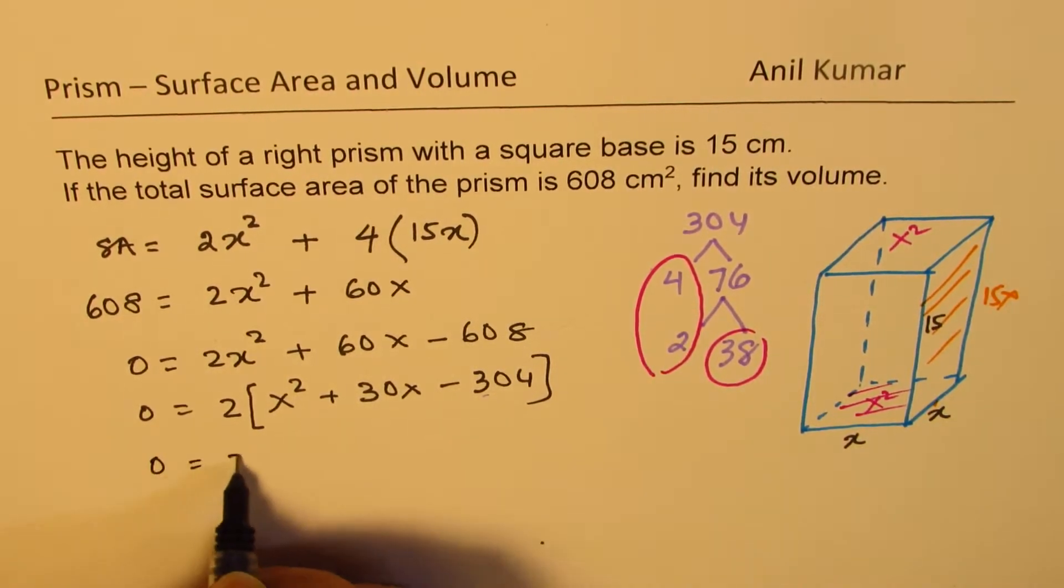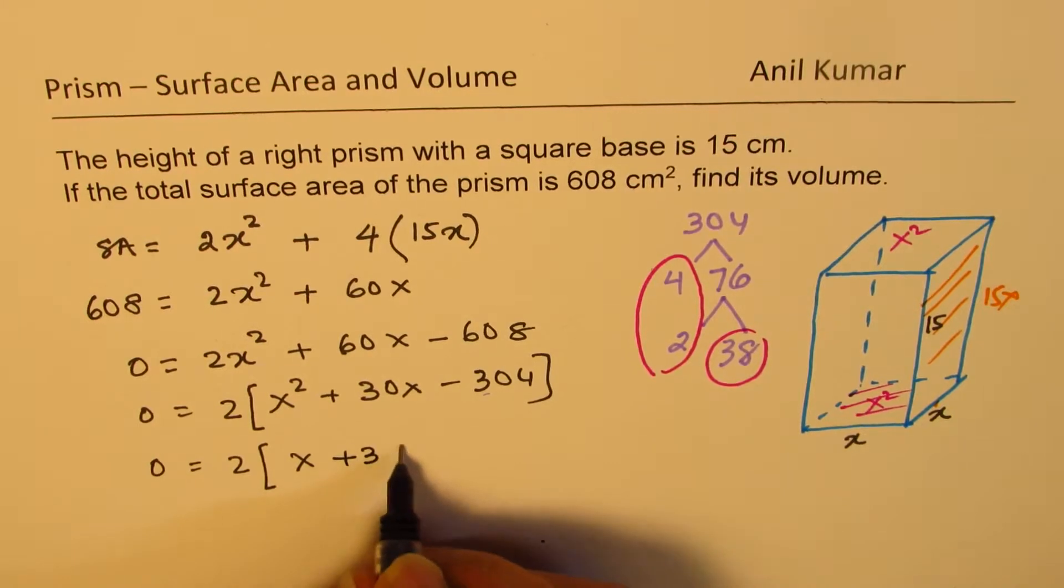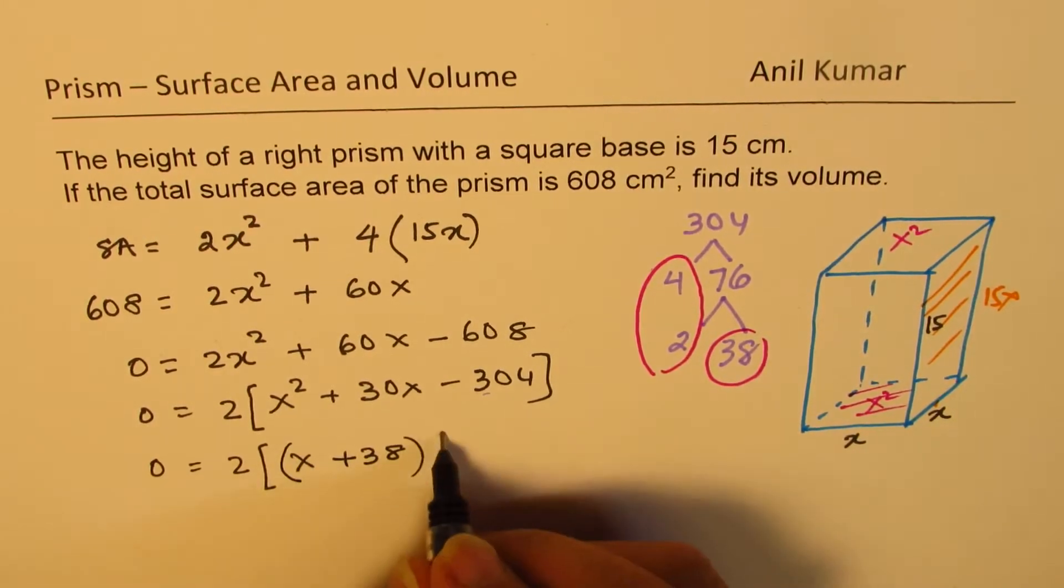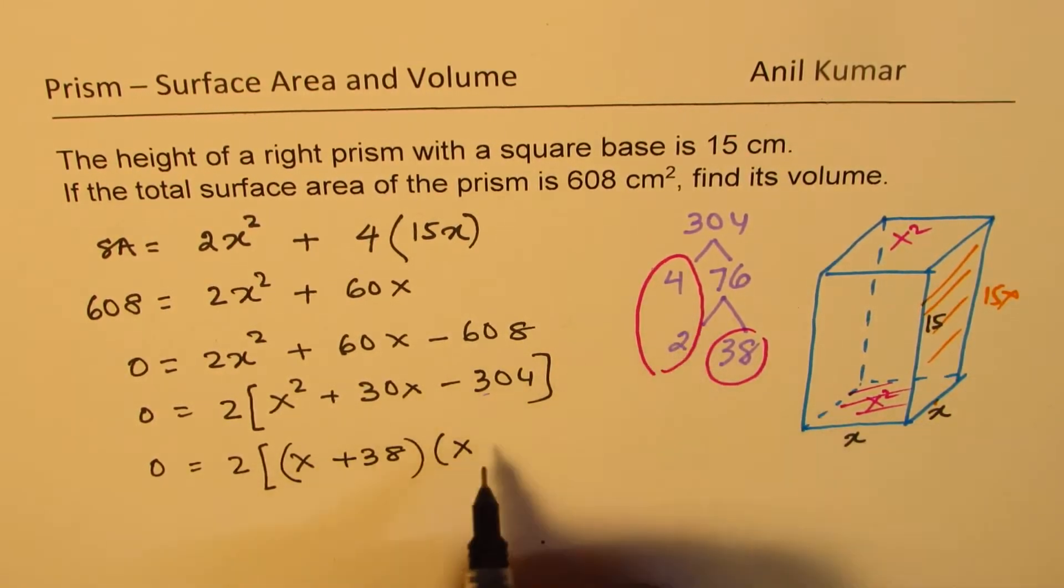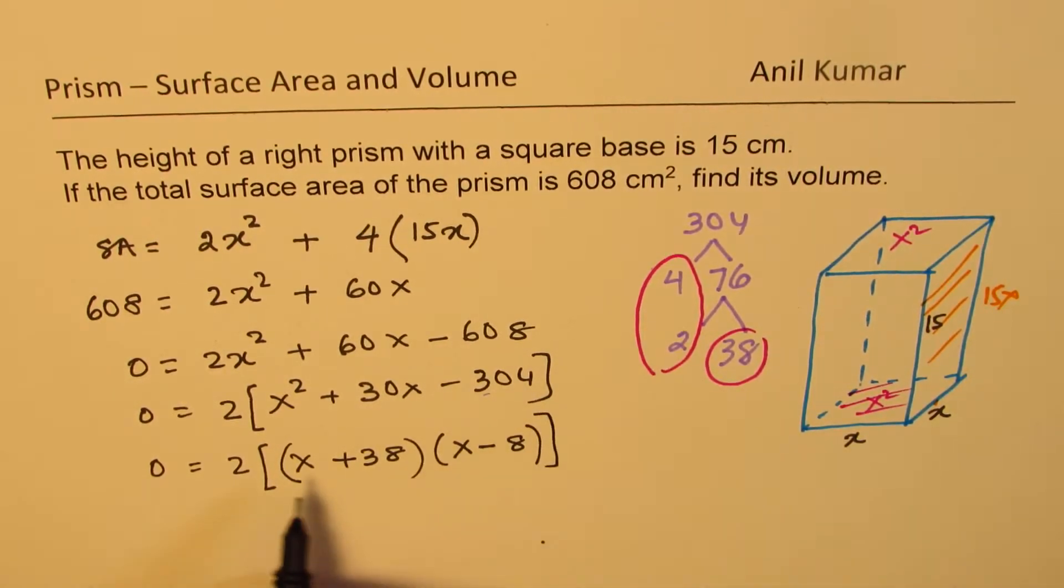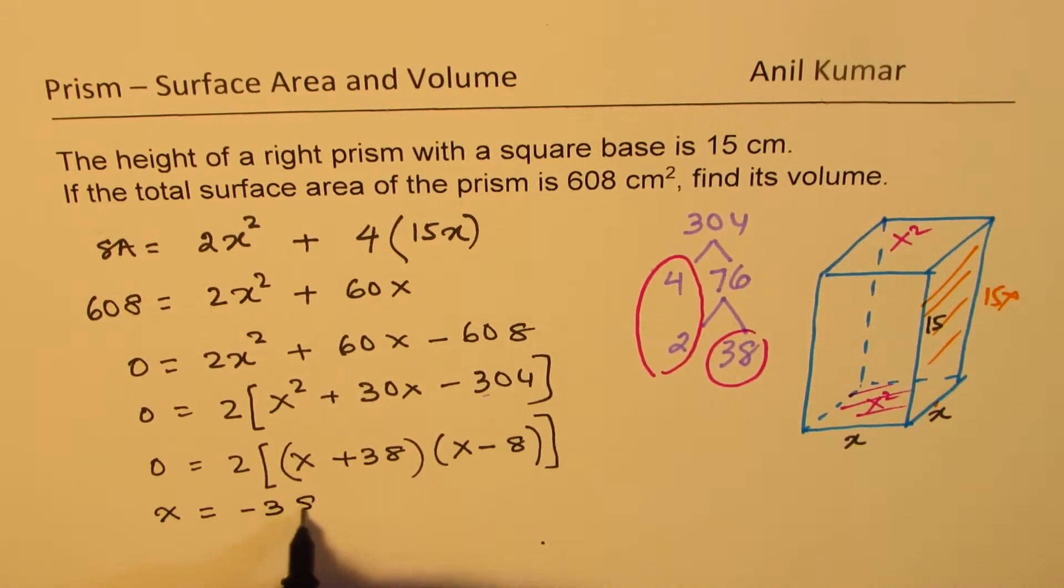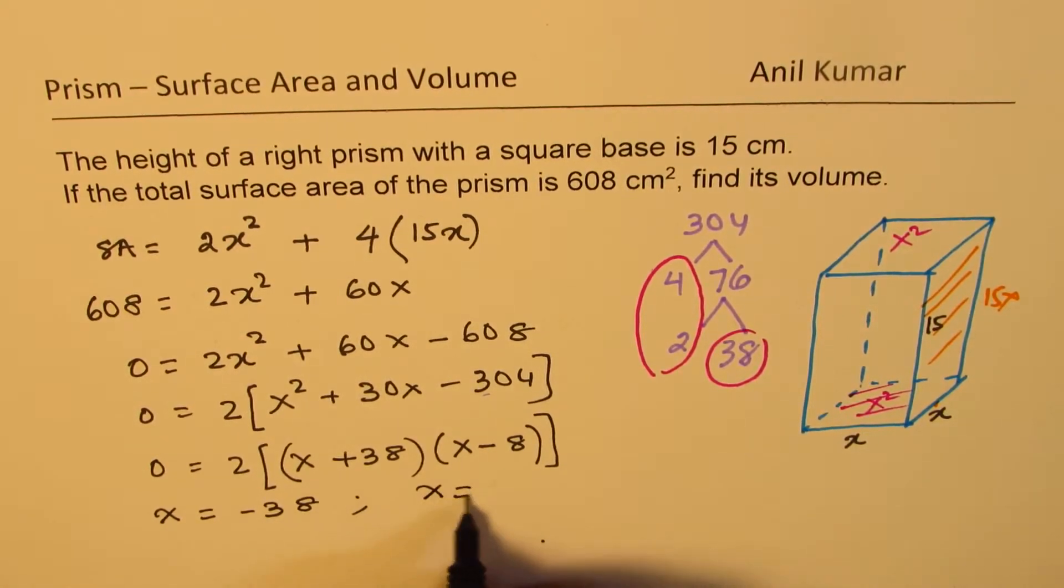So this could be factored as 2 times x. Now, we need positive number bigger. So x plus 38 times x minus 8. So 4 times 2. Now, this equation will give us 0 for x equals minus 38 or x equals 8.